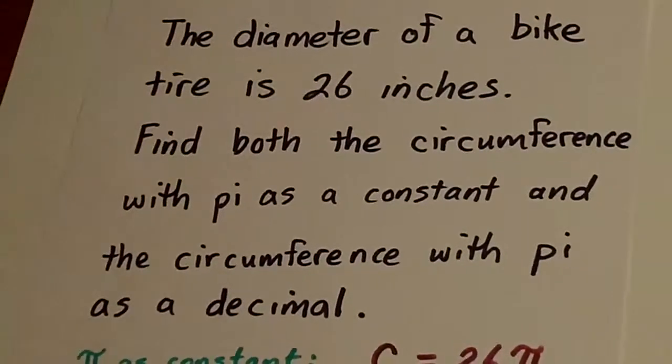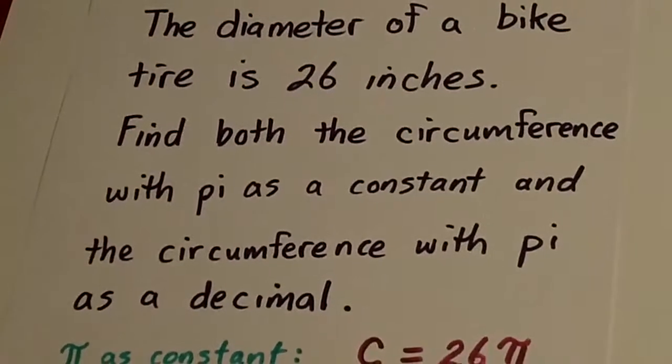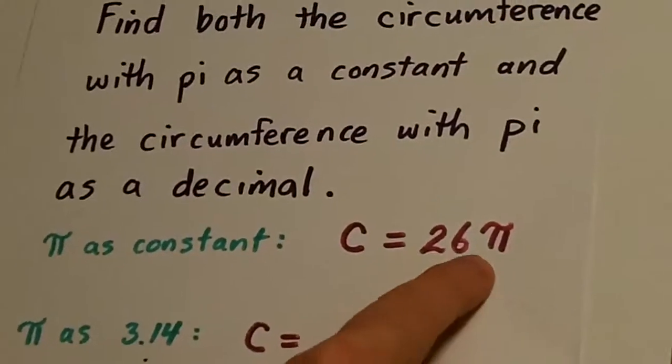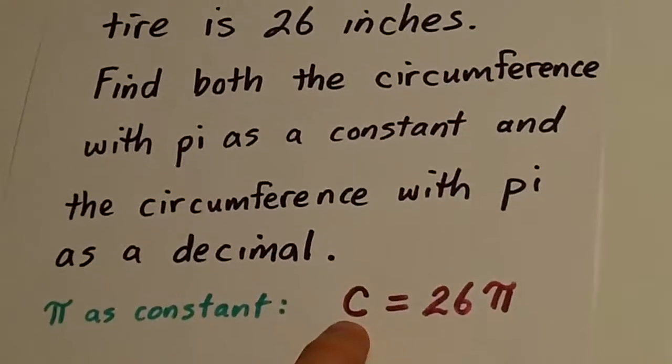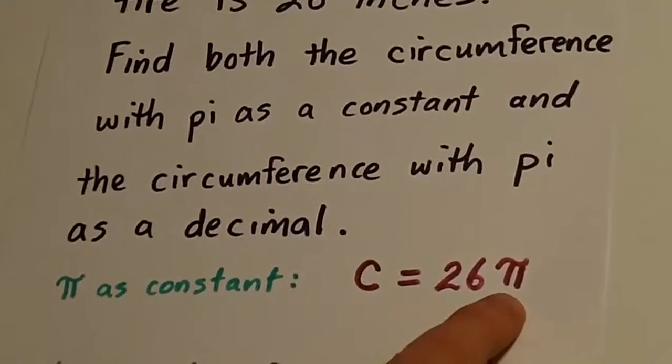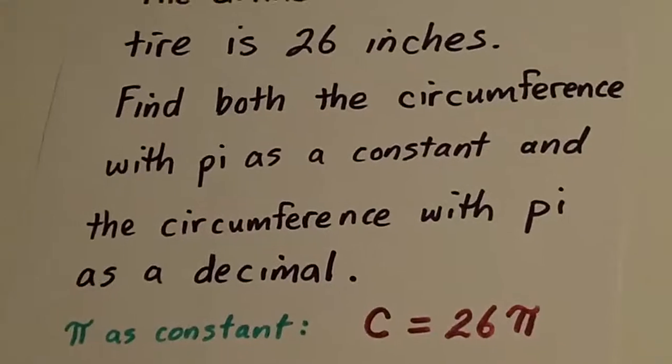Okay, so I'm just going to remember that circumference is equal to the diameter times pi. So with pi as a constant, the circumference is equal to 26 pi. Alright?